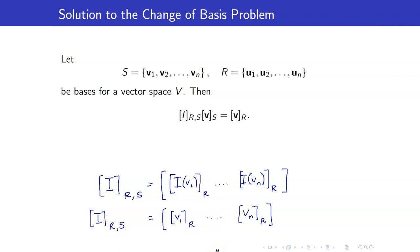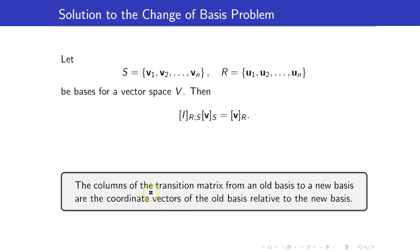To get the transition matrix from S to R, you take the coordinate vectors of the old basis elements — starting from S, going to the new basis R — and get the coordinate vector of each old basis element with respect to the new basis. The columns of the transition matrix from an old basis to a new basis are the coordinate vectors of the old basis relative to the new basis.